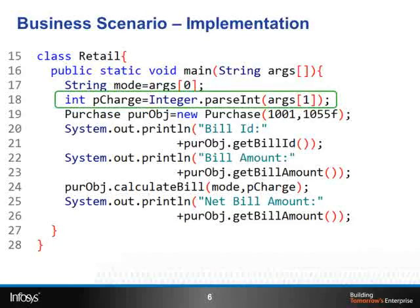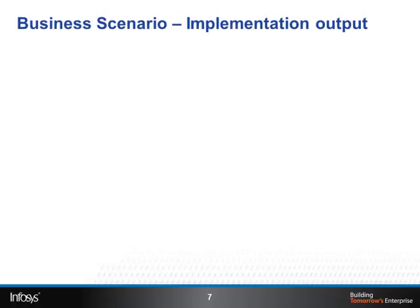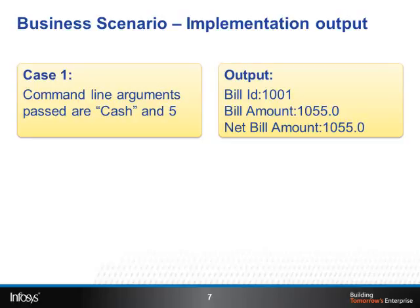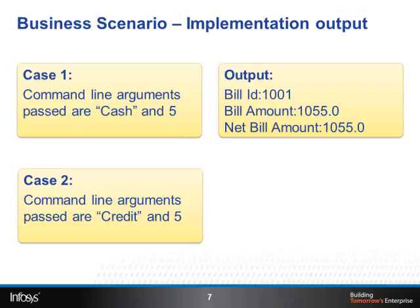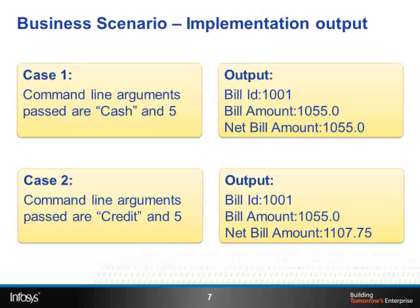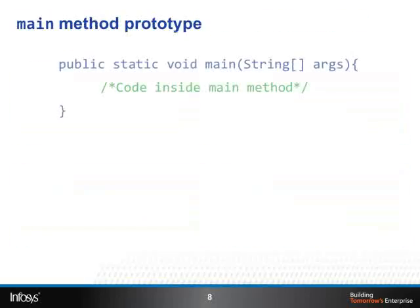Let us analyze the output for two cases. Case 1: the command line arguments passed are 'cash' and '5'. Since there is no processing charge for cash, the net bill amount will remain as the bill amount, that is 1055. Case 2: if the command line arguments passed are 'credit' and '5', a 5% processing charge will be added to the bill amount and the net bill amount will be 1107.75.